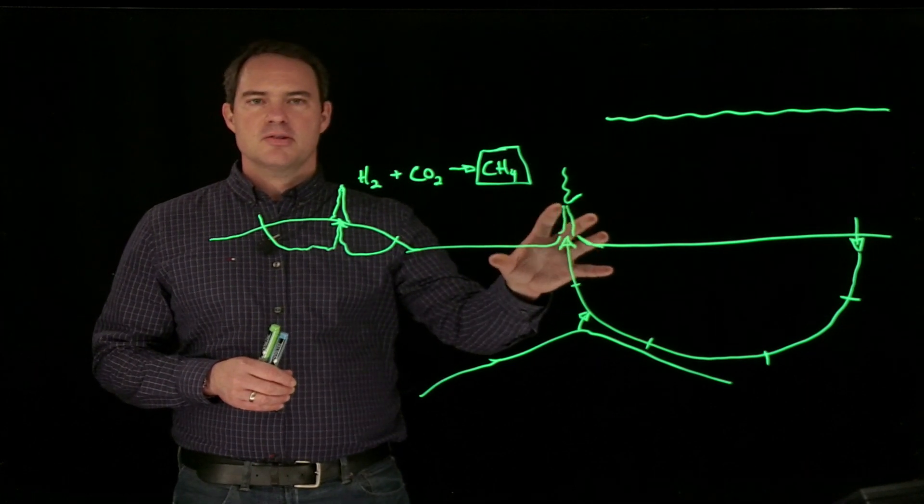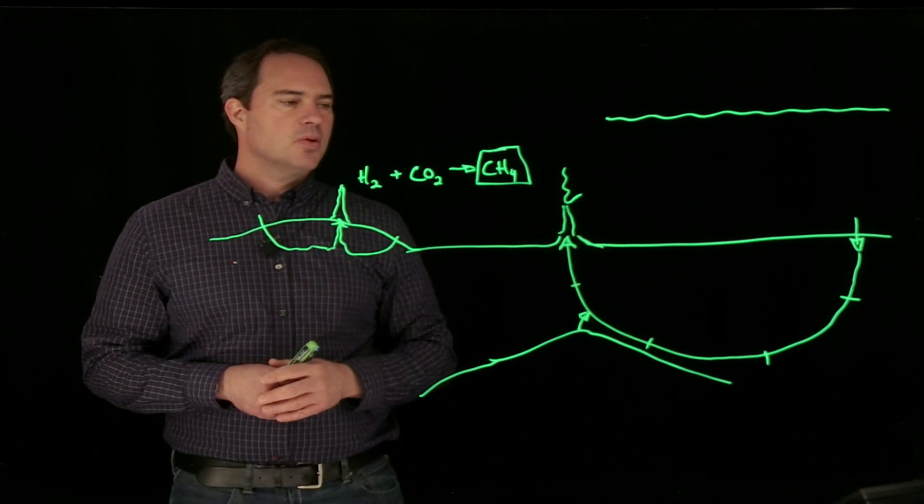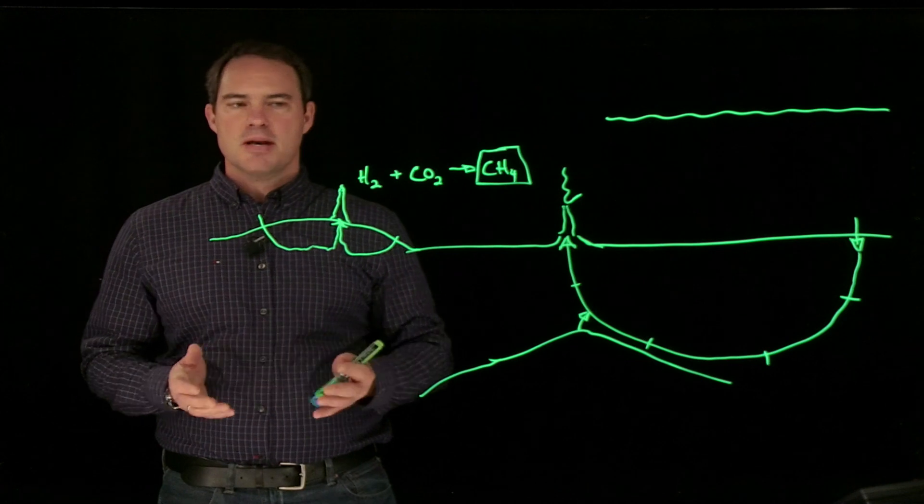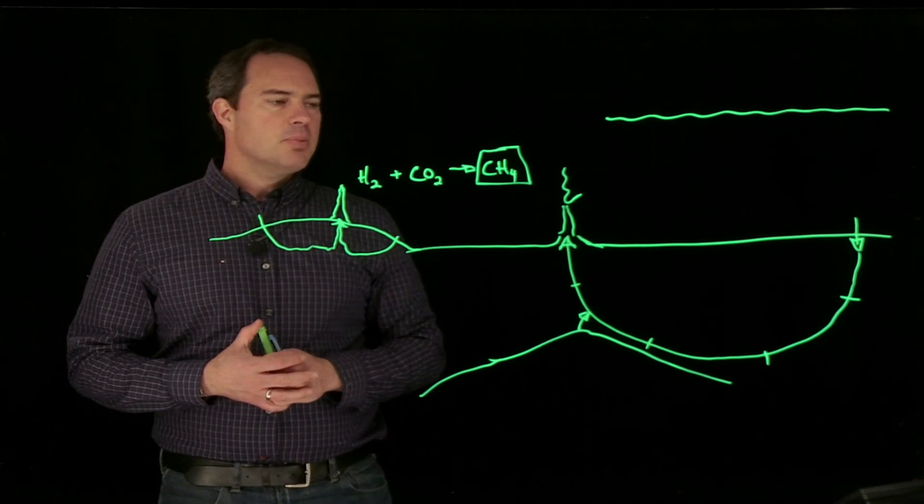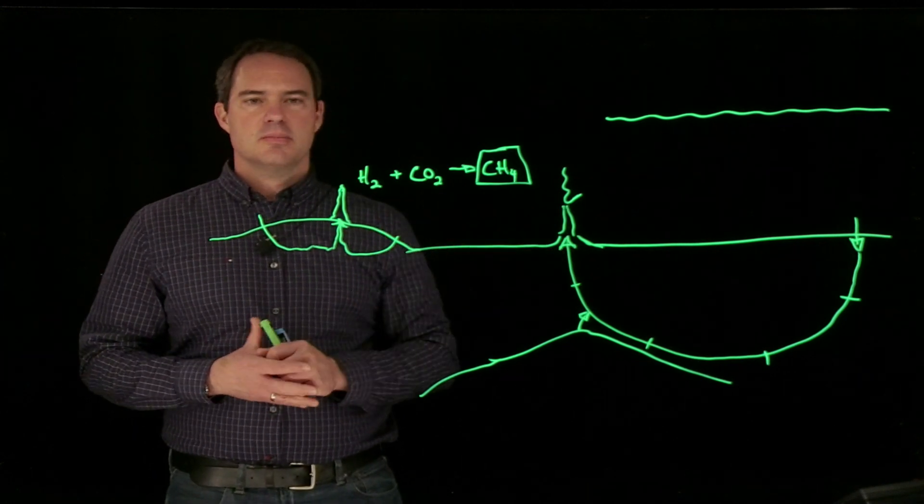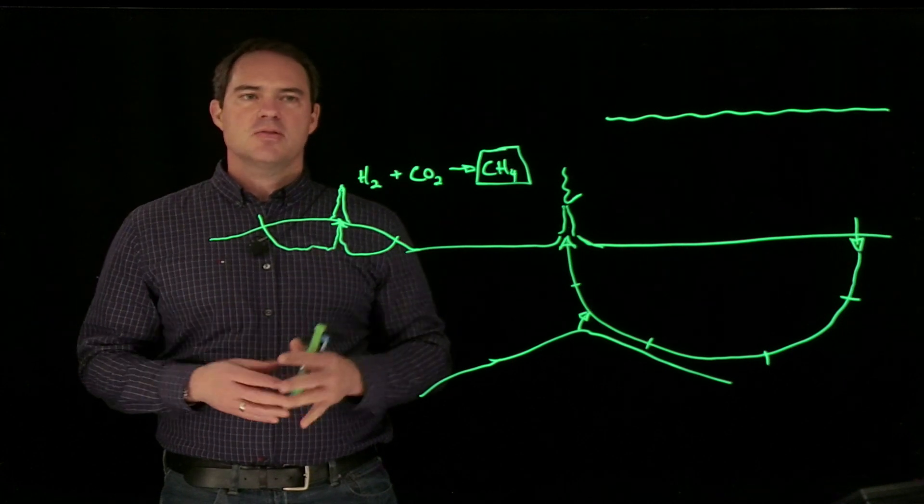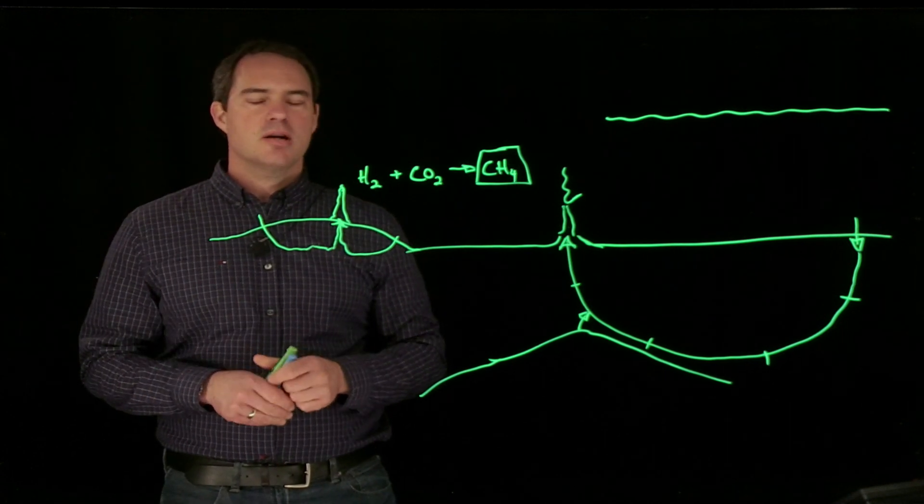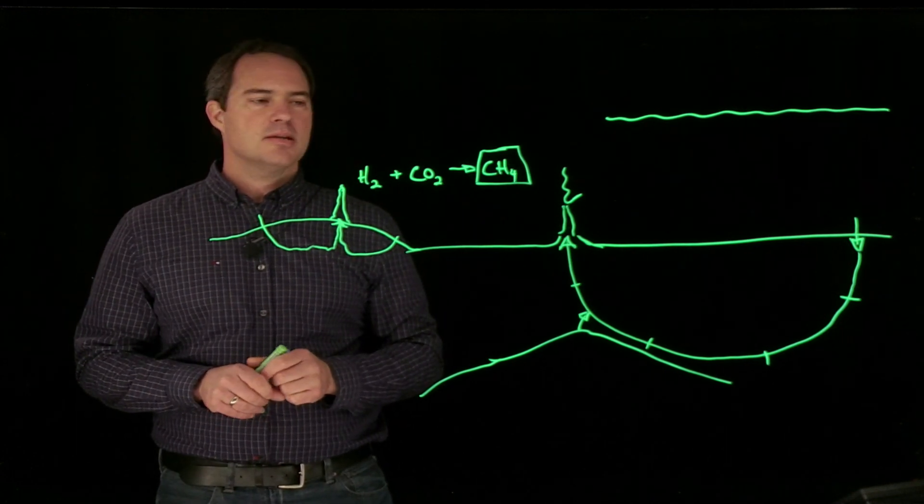Primarily focusing on black smokers associated with the Juan de Fuca Ridge at Axial Seamount, but we're going to target all of these systems as potential sites for ocean worlds on other planets and other planetary bodies.